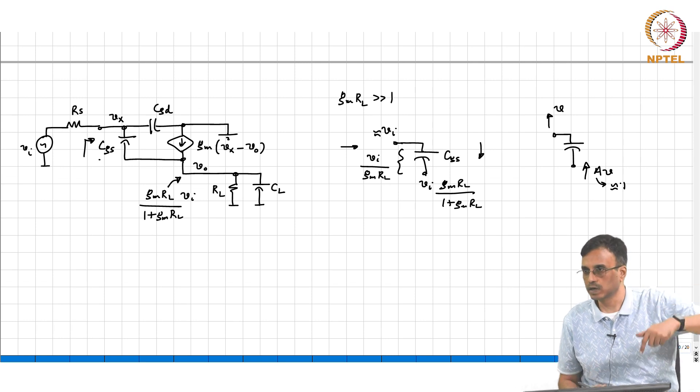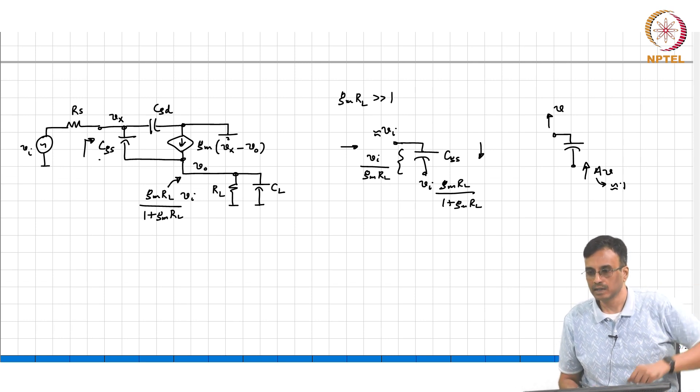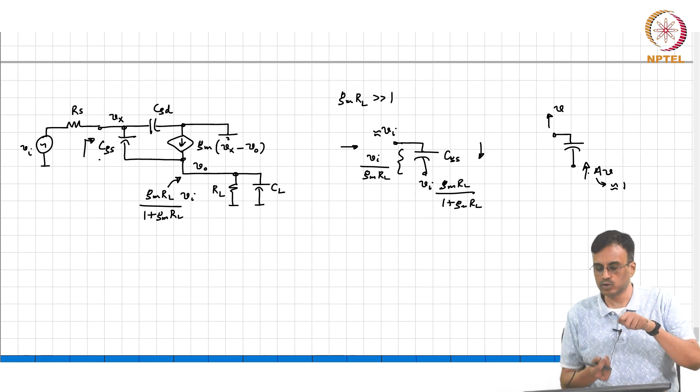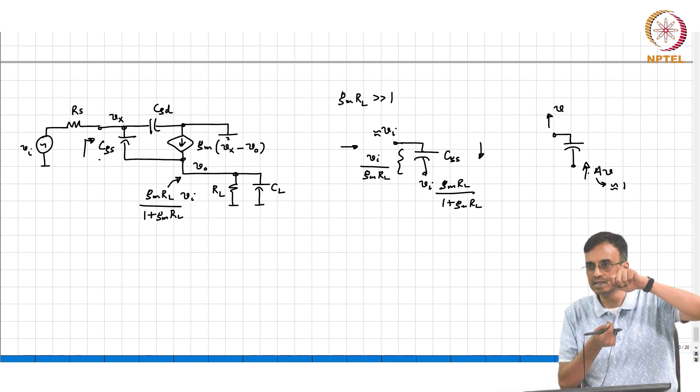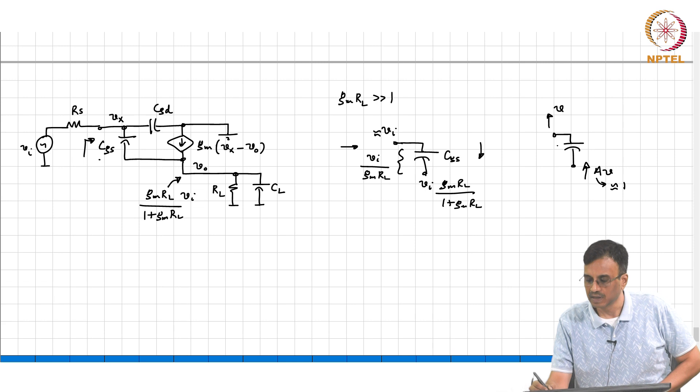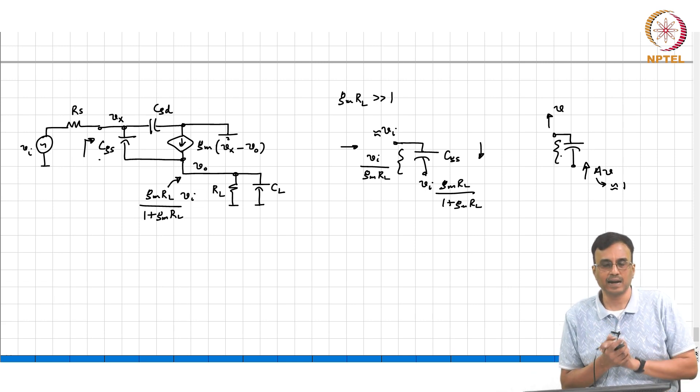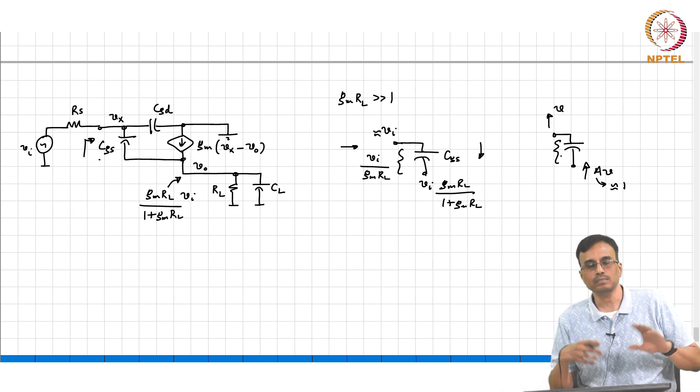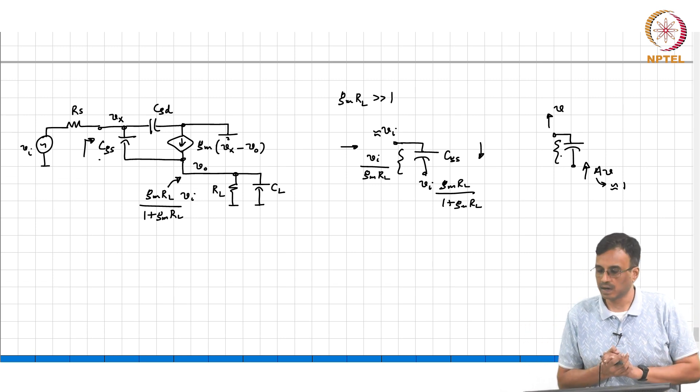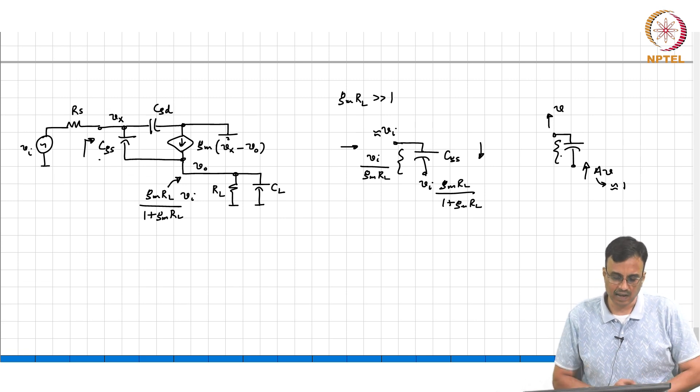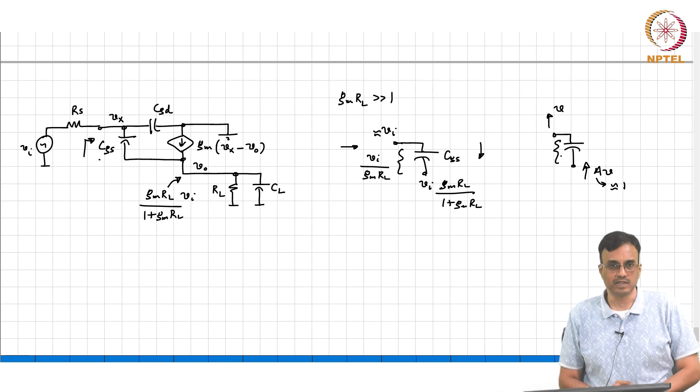If A is exactly equal to 1 then what happens? Even though V is going up, the other plane of the capacitor also going up. So there is no voltage across the capacitor, so no current will flow through it. Here the voltage is going up but is almost going up by the same amount. So therefore the effective voltage across this capacitor is very small and consequently the current through the capacitor is very small, and therefore the looking in capacitance looks like a small fraction of CGS.